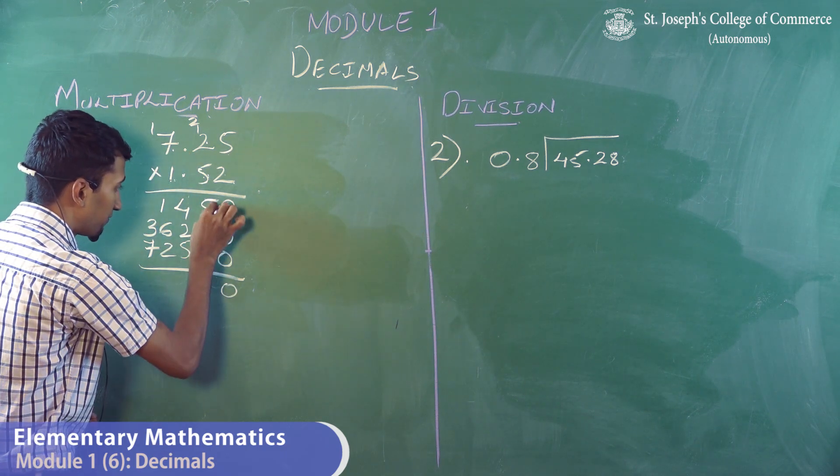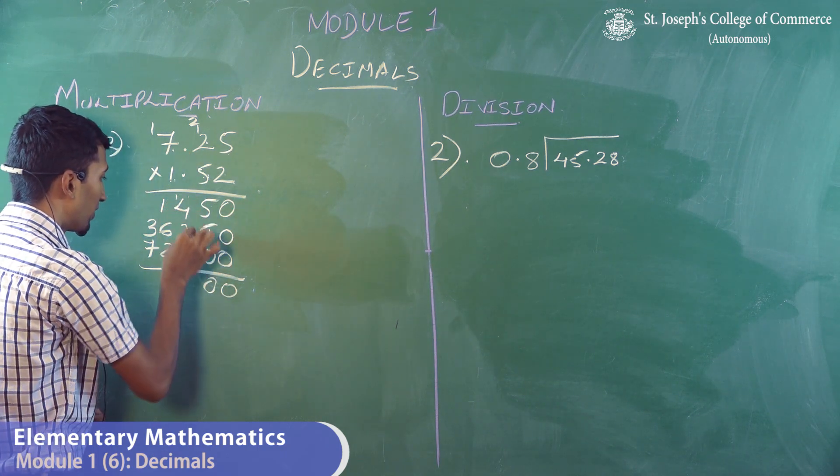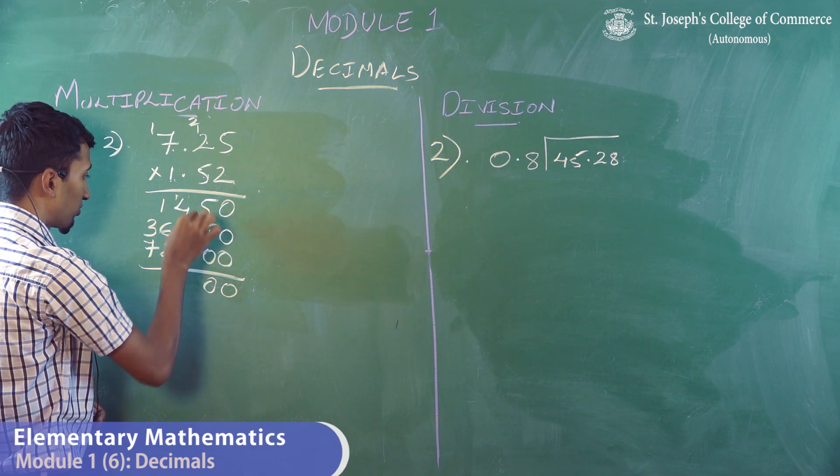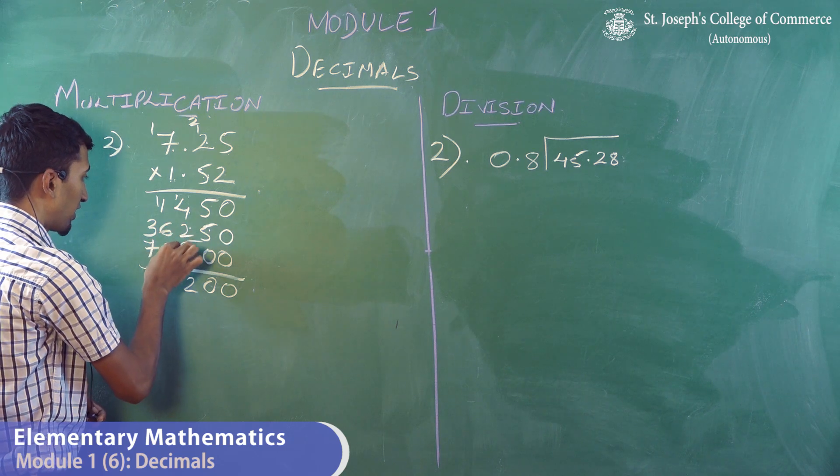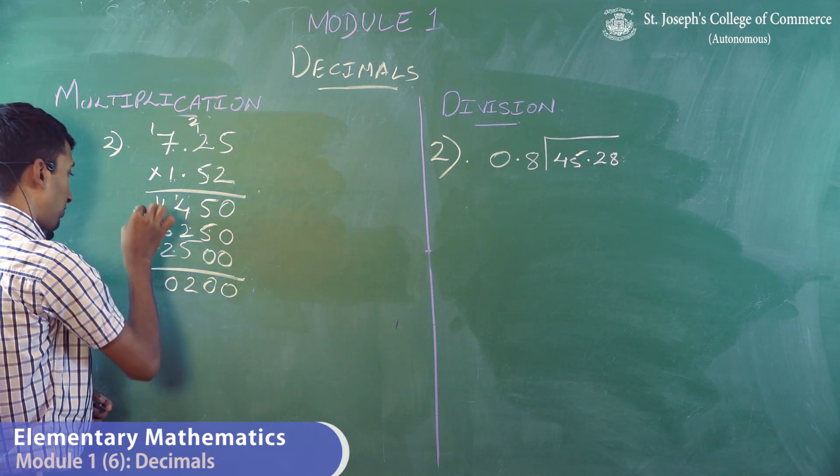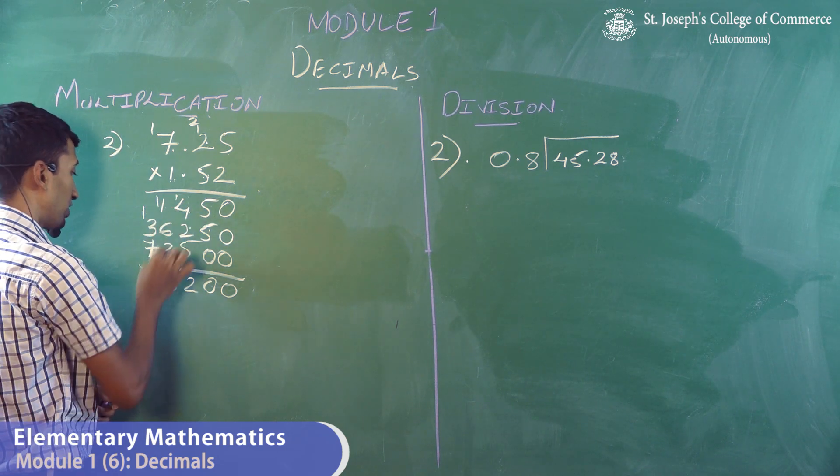0. 5 plus 5, 10. 0 carry 1, 1. 5 plus 4, 9 plus 1, 10. Plus 2, 12. Carry 1. 6, 7, 8, 9, 10. 0 carry 1. 7 plus 3, 10 plus 1, 11.